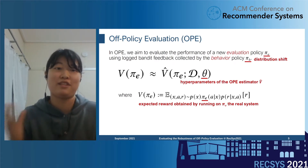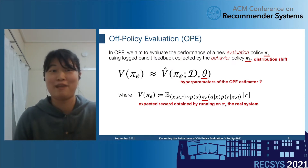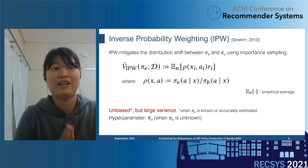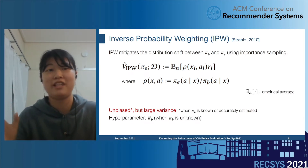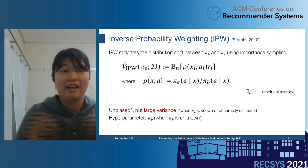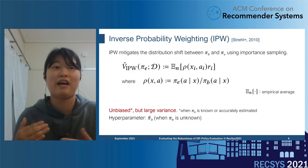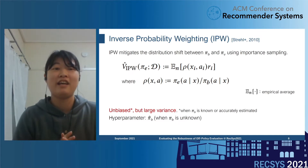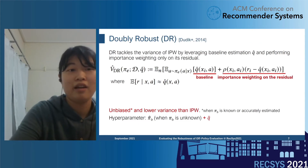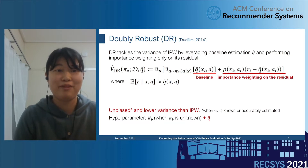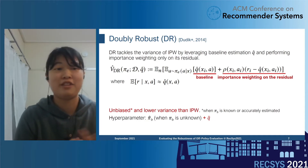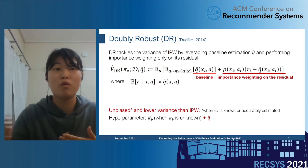To overcome this issue, the research community has produced a number of OPE estimators with different hyperparameters. For example, Inverse Probability Weighting (IPW) mitigates the distribution shift between the behavior and evaluation policy using importance sampling. IPW is unbiased and hyperparameter-free when the behavior policy is known, but it is known to suffer from large variance, leading to unstable estimation. To tackle this variance issue, Doubly Robust (DR) leverages a baseline estimation Q-hat as a control variate, performing importance weighting only on its residual. DR is beneficial because it is unbiased and also lowers the variance compared to IPW.